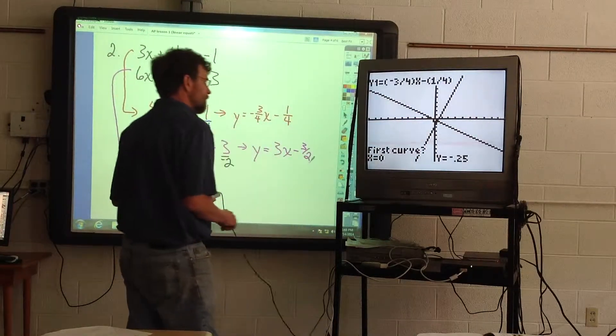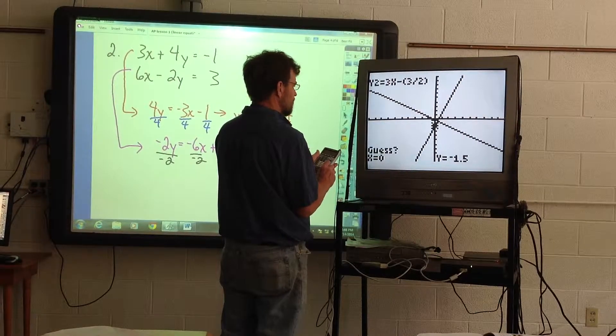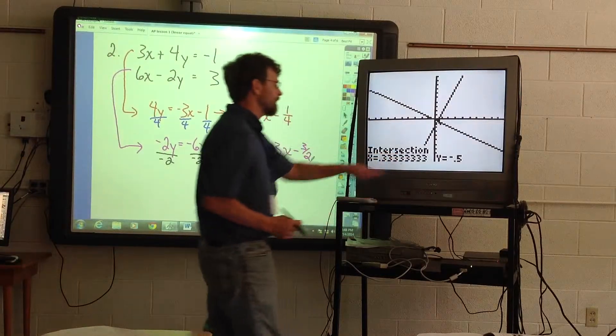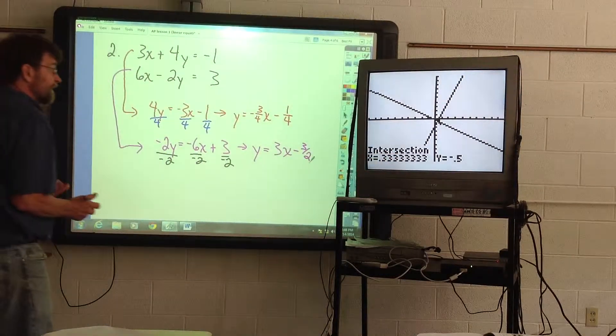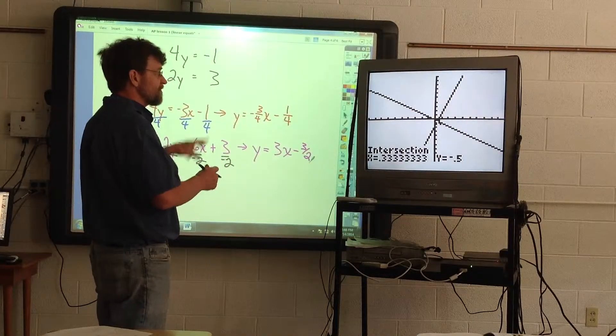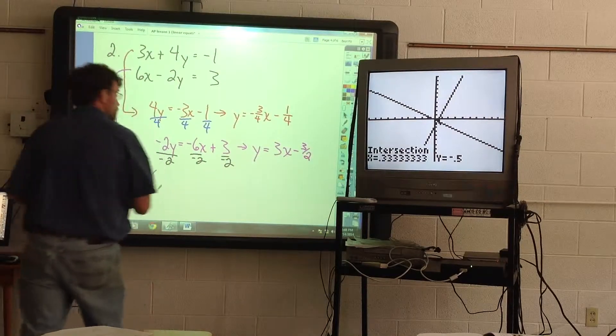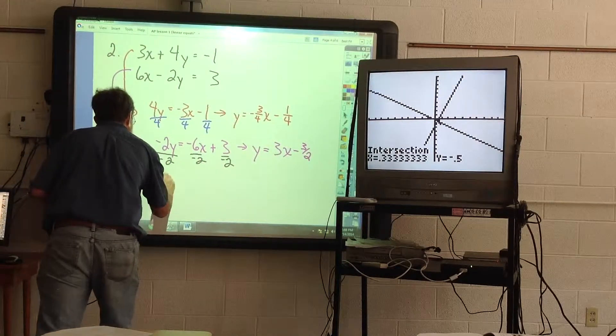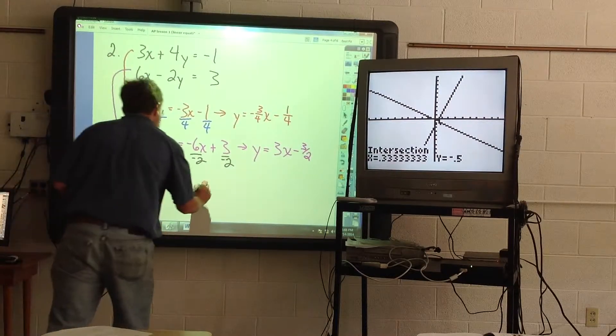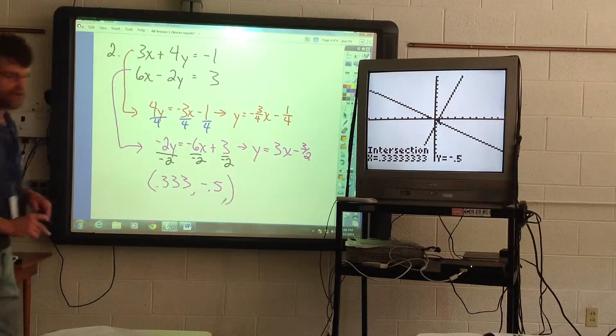And then you hit second, calc, intersect, and then you've got your two curves. First curve, just hit enter, second curve, hit enter, guess, hit enter. All right, and so you're not going to get whole numbers. You may recognize that as one-third. In the AP calculus test, in these instances, they always round off to the nearest thousandth, so that's what we'll do. So our solution is 0.333, negative 0.5, and that will be our solution to that.